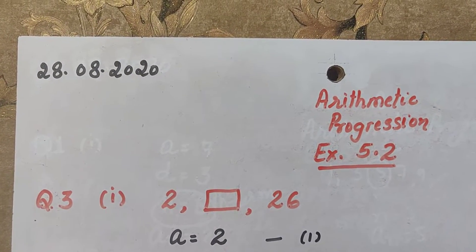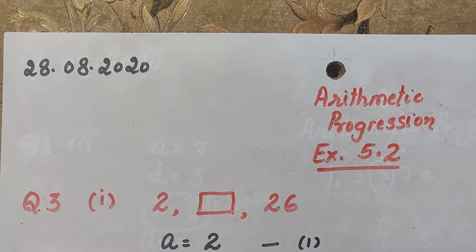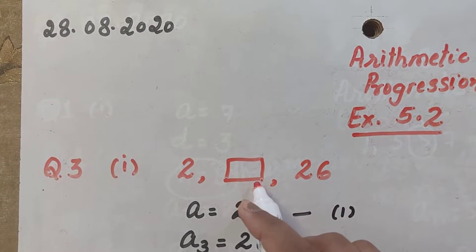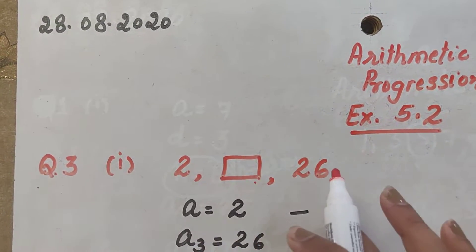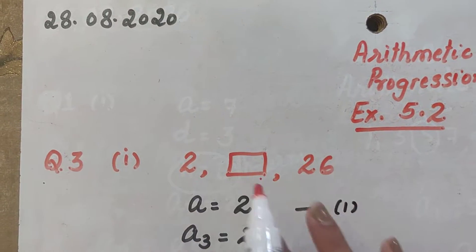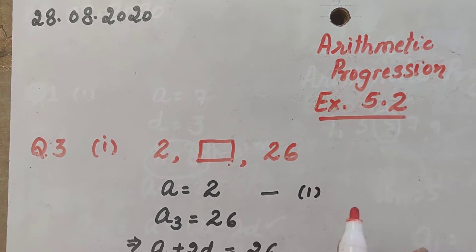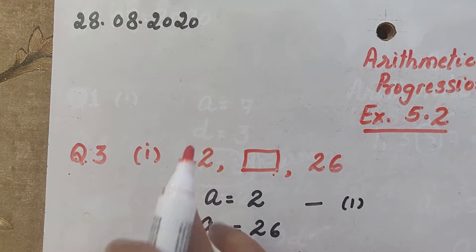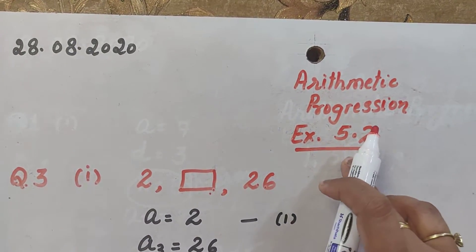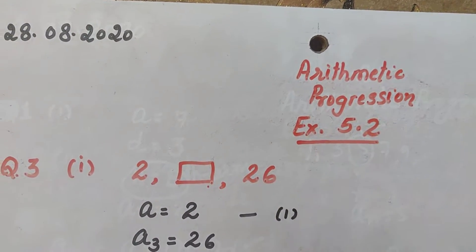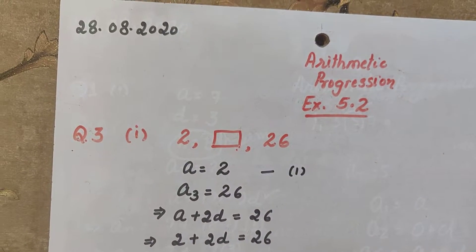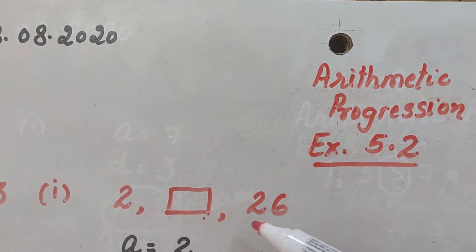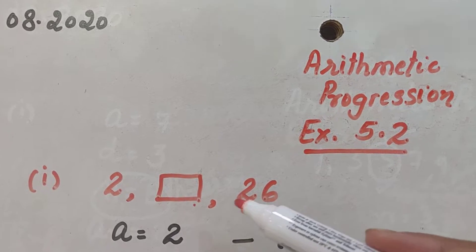In this video I am going to tell you how to find the missing terms of an AP. If any term is missing in an AP, how to find that. This is question number three, first part of exercise 5.2 of arithmetic progression.